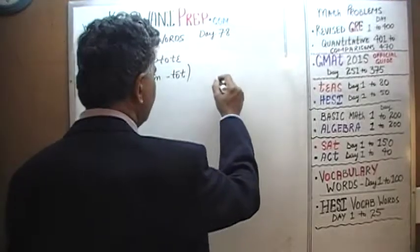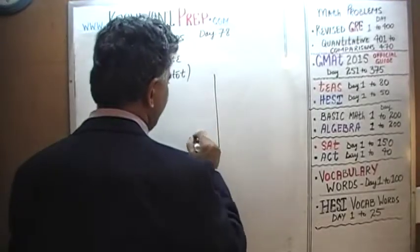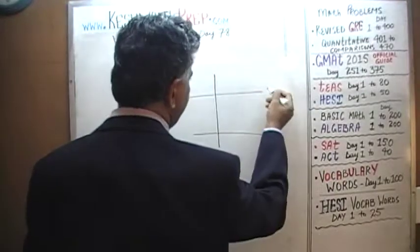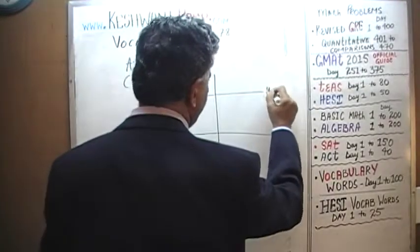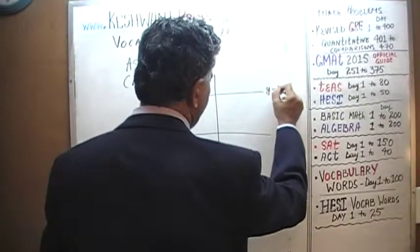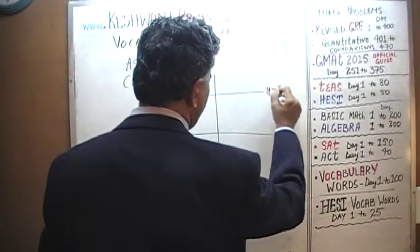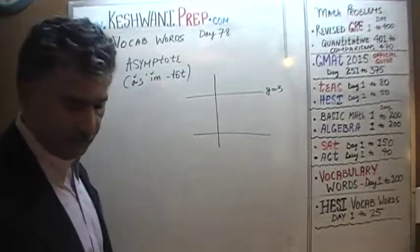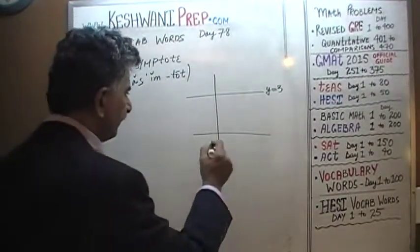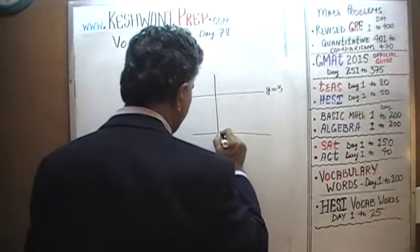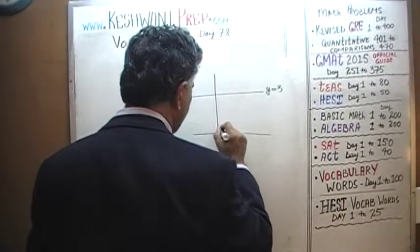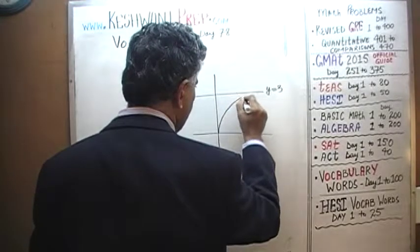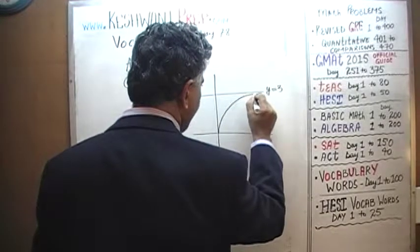Let's see it in the graph. Say for example we have a line with the equation y equals 3. That's the equation of this line, and here is this curve. It's going to get closer and closer to 3, but never quite touch it.